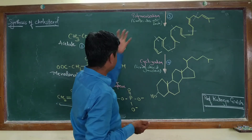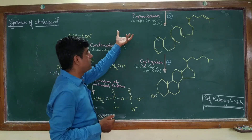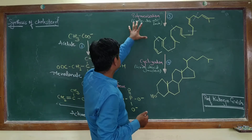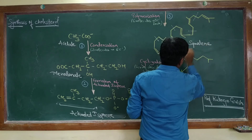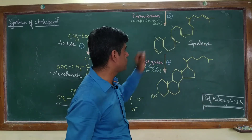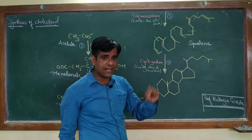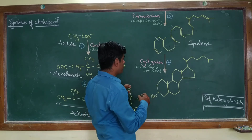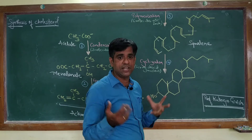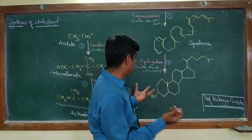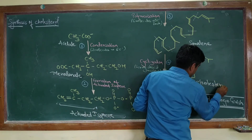The third major step is polymerization: six molecules of isoprene, each containing five carbon atoms, come together to form the linear intermediate squalene. This is followed by the fourth step — cyclization — which involves formation of the four-ring steroid nucleus through oxidation, removal, and migration of methyl groups and rearrangement, ultimately forming the final product, cholesterol.